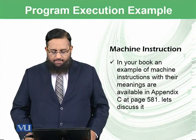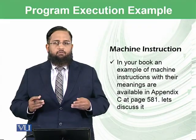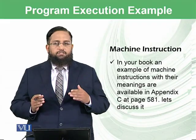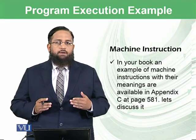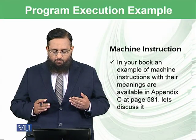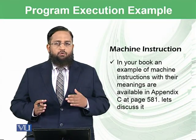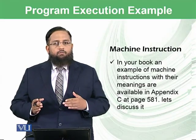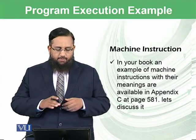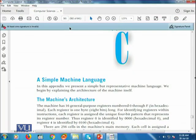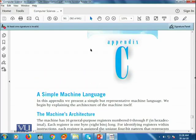In your book there is an example of a machine. Your book follows a machine and set of instructions that have been made, and those instructions are referred to in different chapters. I want you to see page 581 to see which kind of instructions are available, what they mean, and then we will apply those instructions in today's lecture. I have opened the book at page 581, and it is Appendix C.